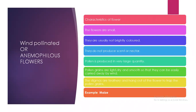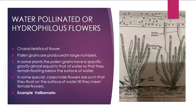Wind-pollinated or anemophilous flowers: the flowers are small and usually not brightly colored. They do not produce scent or nectar. Pollen is produced in very large quantities. Pollen grains are light, dry, and smooth so that they can be easily carried away by the wind. The stigmas are feathery and hang out of the flower to trap pollen grains, as in maize. Water-pollinated or hydrophilous flowers: pollen grains are produced in large quantities. In some plants, pollen grains have a specific gravity almost equal to that of water so they remain floating below the surface. In some special cases, male flowers float on the surface of water until they meet the female flowers. Example: Vallisneria.